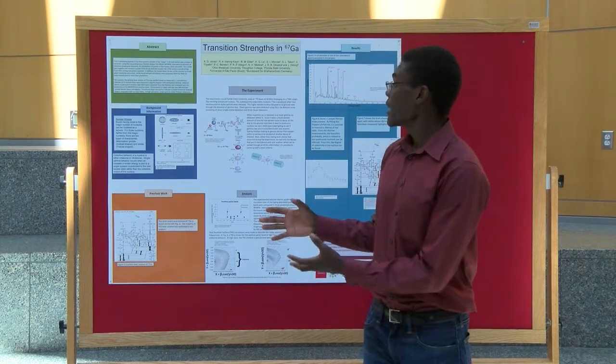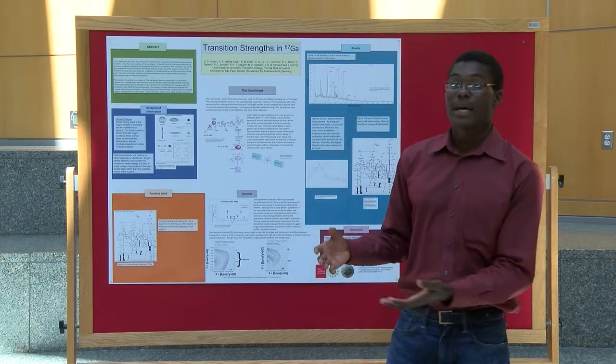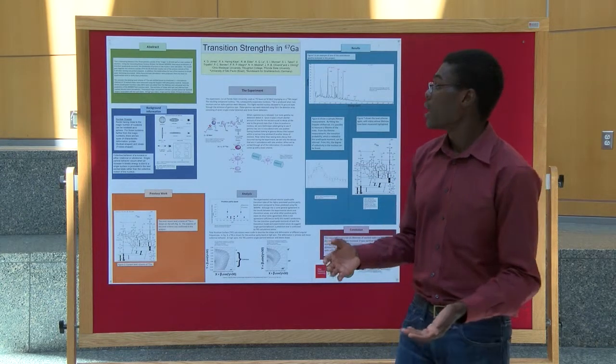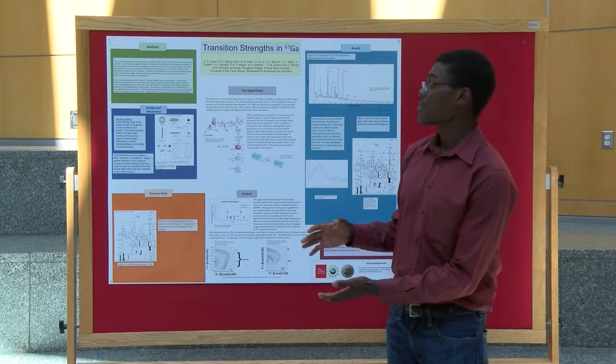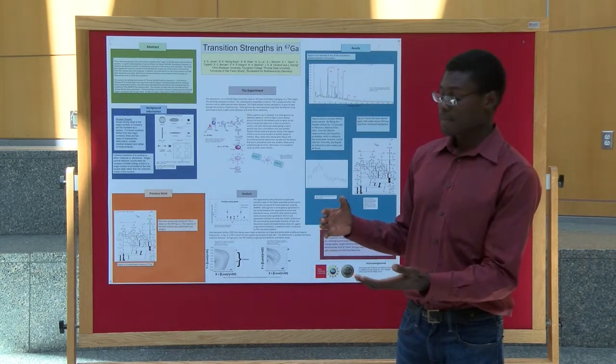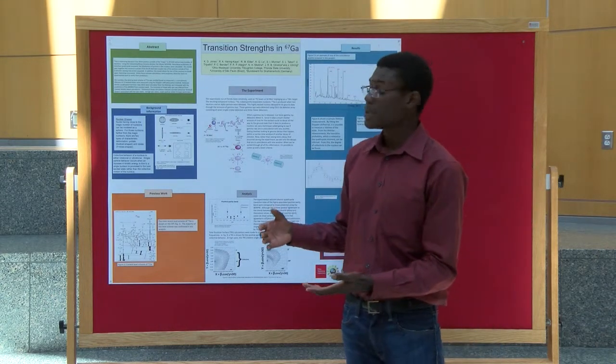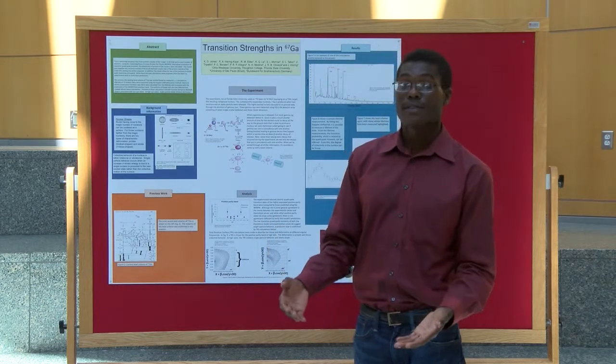In gallium 67 and in the mass region around mass 70, when you increase the deformation to high enough prolate deformation, it's predicted that you might have states that inhabit this elusive F7 halves band.